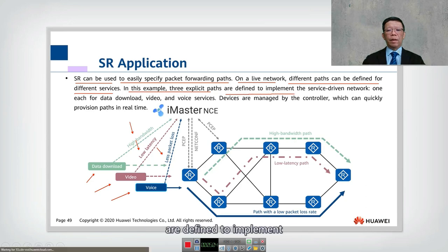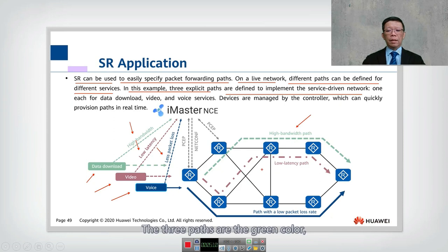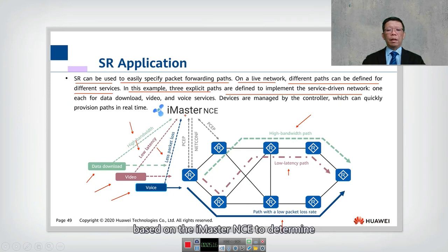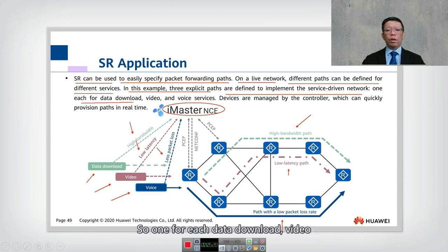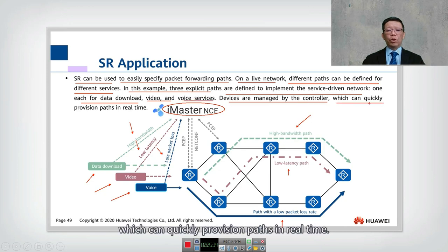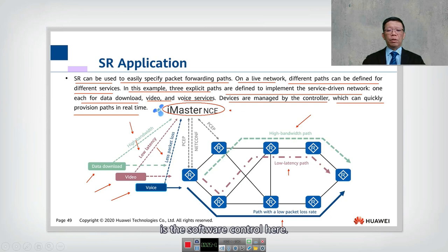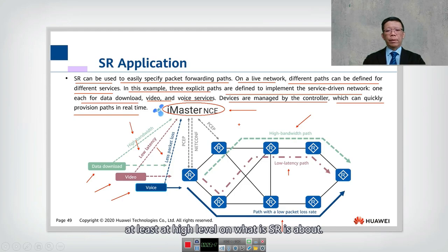Three explicit paths are defined to implement a service-driven network: the green, red, and blue paths. Each has its own different route, determined by iMaster NCE based on highest bandwidth, lowest latency, or least packet loss. The controller has all this information and manages devices, quickly provisioning paths in real time. The real benefit of segment routing is this software control capability.